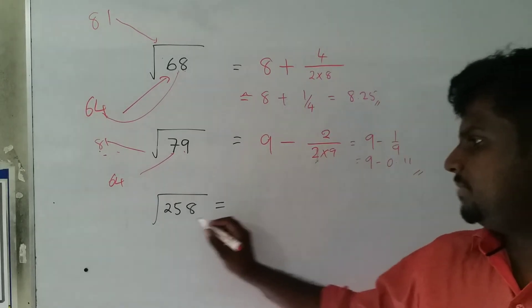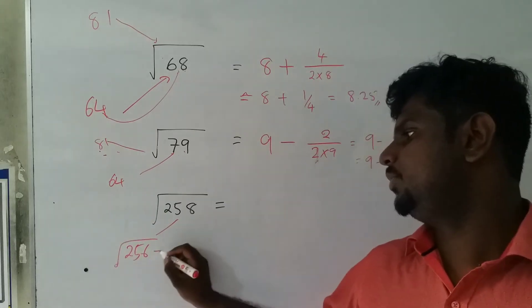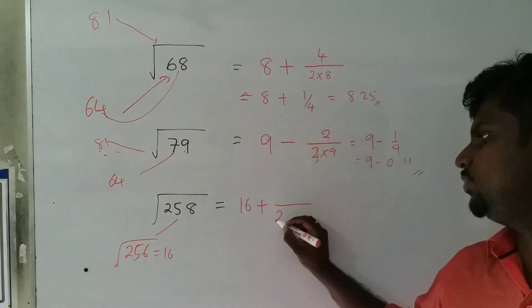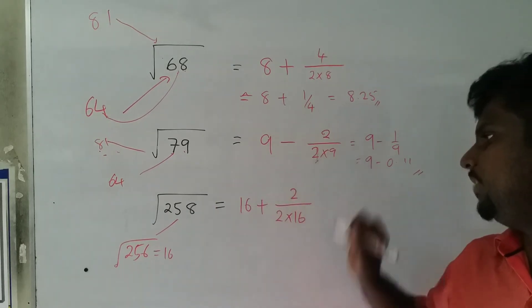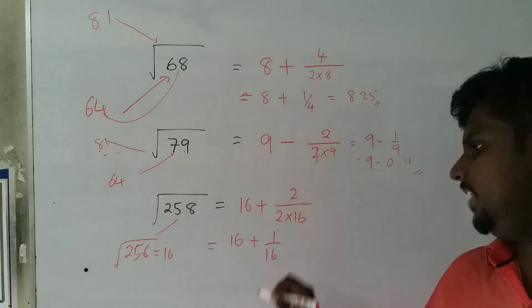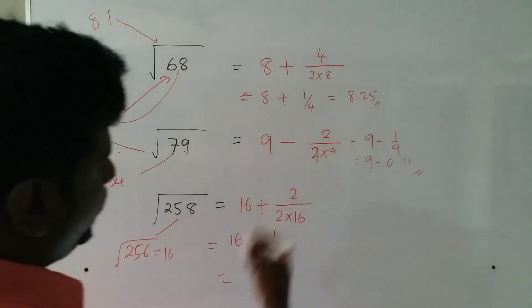What about this? Square root of 258 - it's very close to 256. So it's definitely going to be 16 plus something. 2 into 16 is 32. So this is going to be 16 plus 2 over 32, which is 16 plus 1/16.